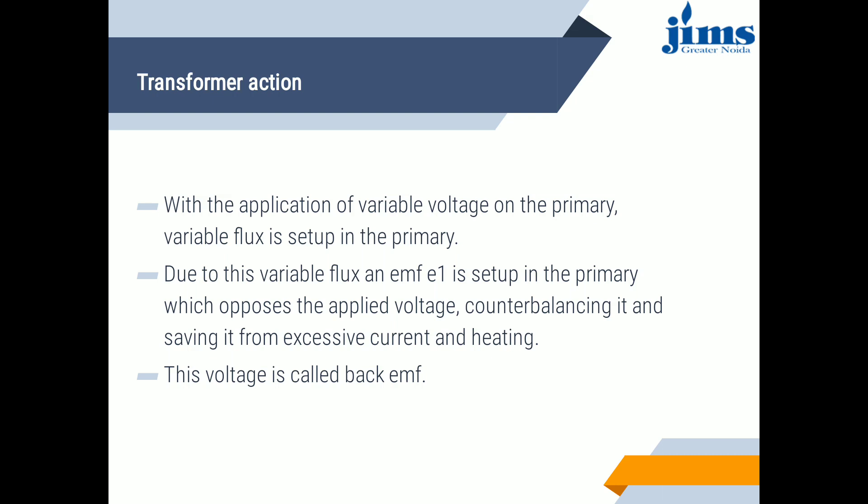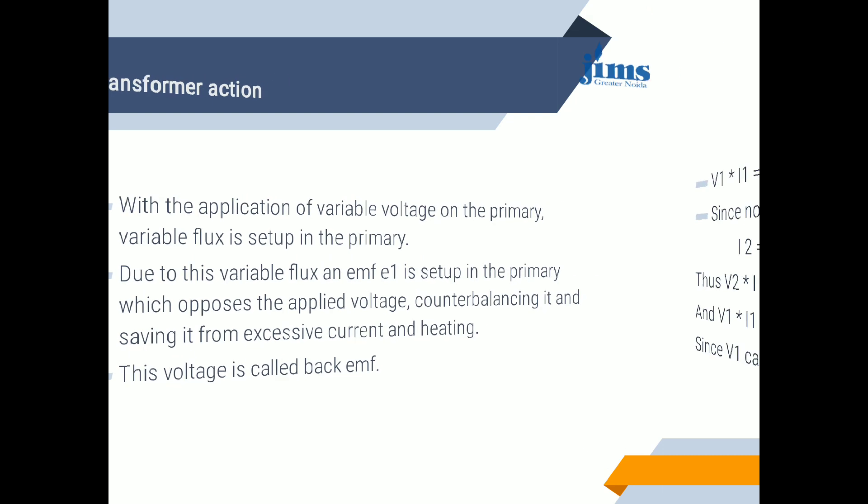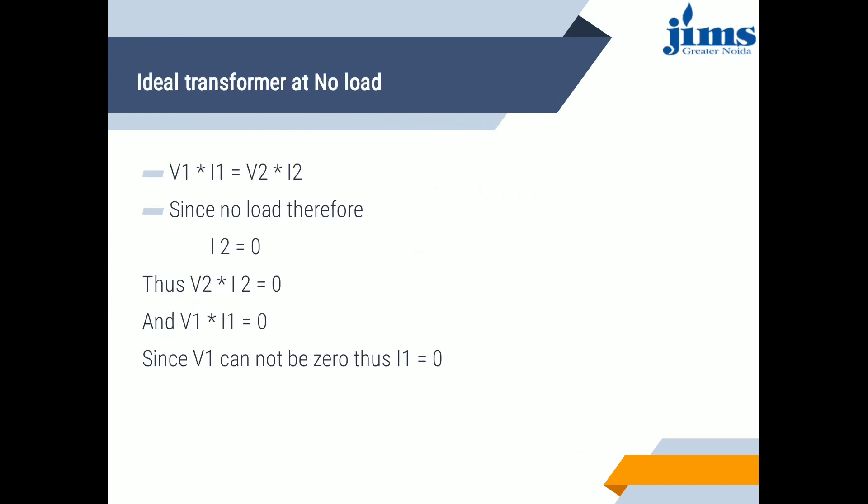With the application of a variable voltage on the primary, variable flux is set up in the primary winding. Due to this variable flux, an EMF is induced in the primary which opposes the applied voltage, counter-balancing it and saving it from excessive current and heating. This voltage is called back EMF.